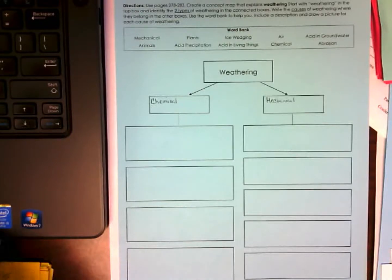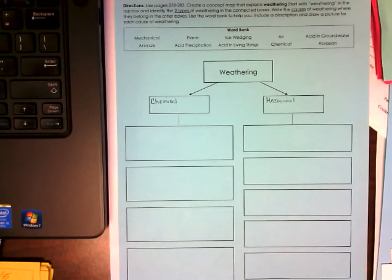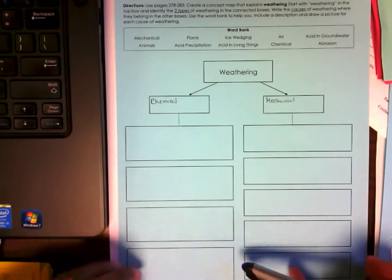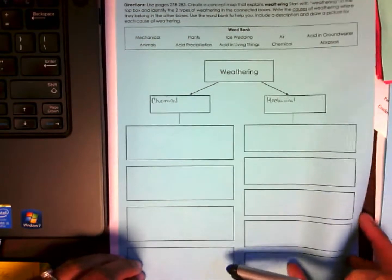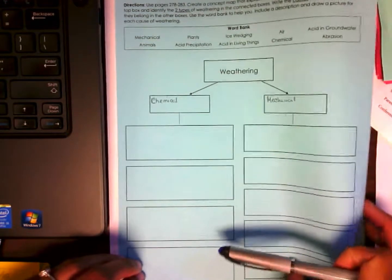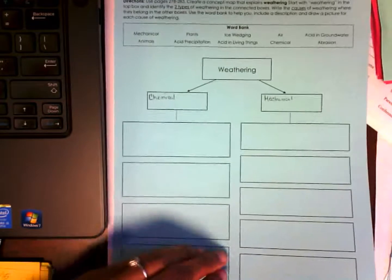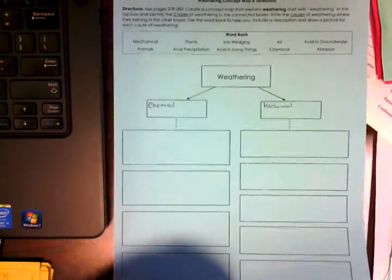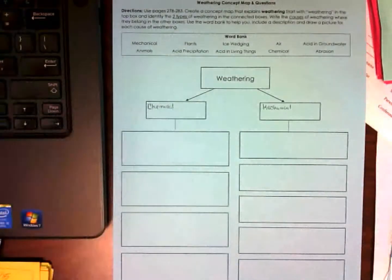Okay, let's go ahead and get started and finish filling out our weathering concept map. You were to use pages 278 to 283 to create a concept map that explains weathering. You started off with weathering in the top box and you had to identify two types of weathering in the connected boxes below. Write the causes of weathering where they belong in other boxes. Use the word bank to help you. Include a description and draw a picture for each cause of weathering.